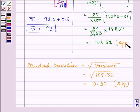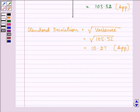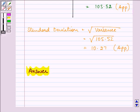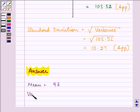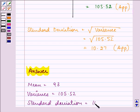This was also an approximate value. So we can write that the answer here is mean is equal to 93, variance is equal to 105.52 and standard deviation as 10.27, right?